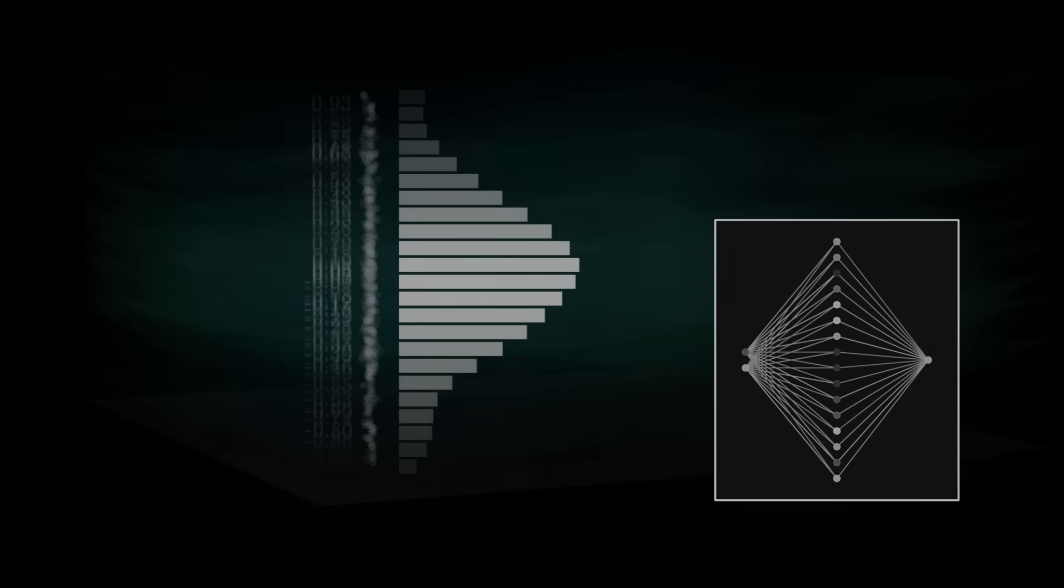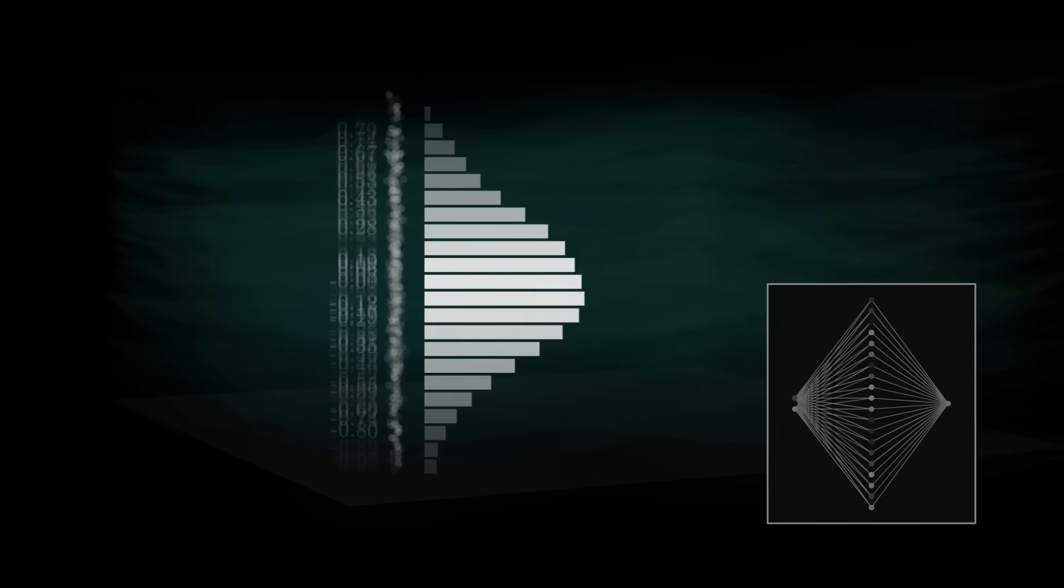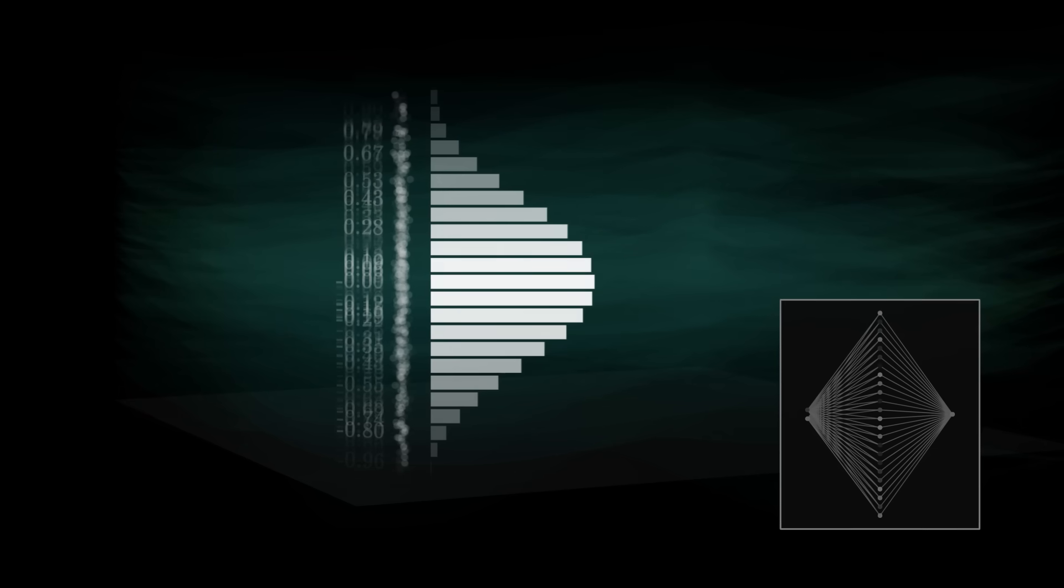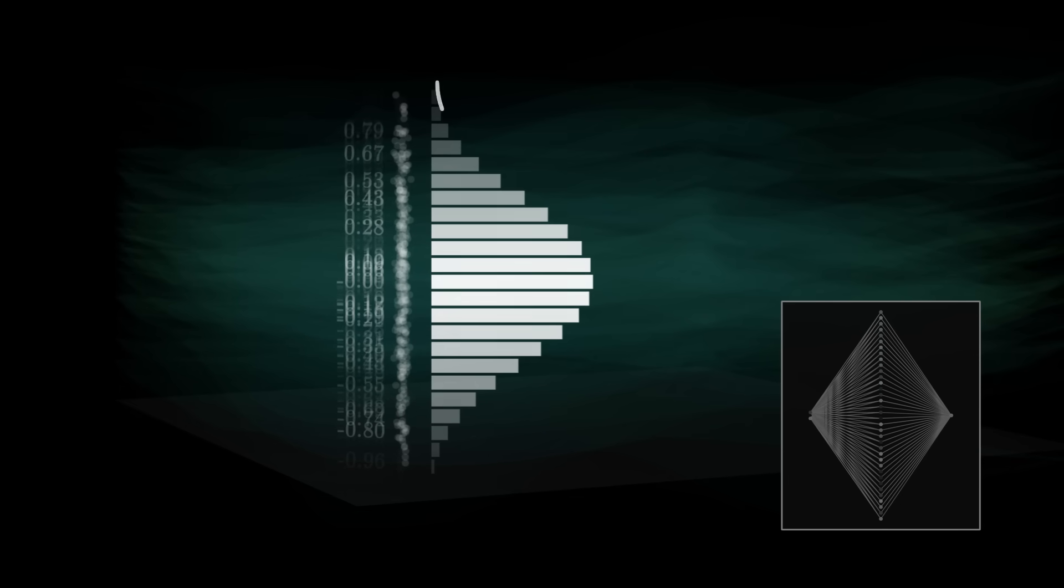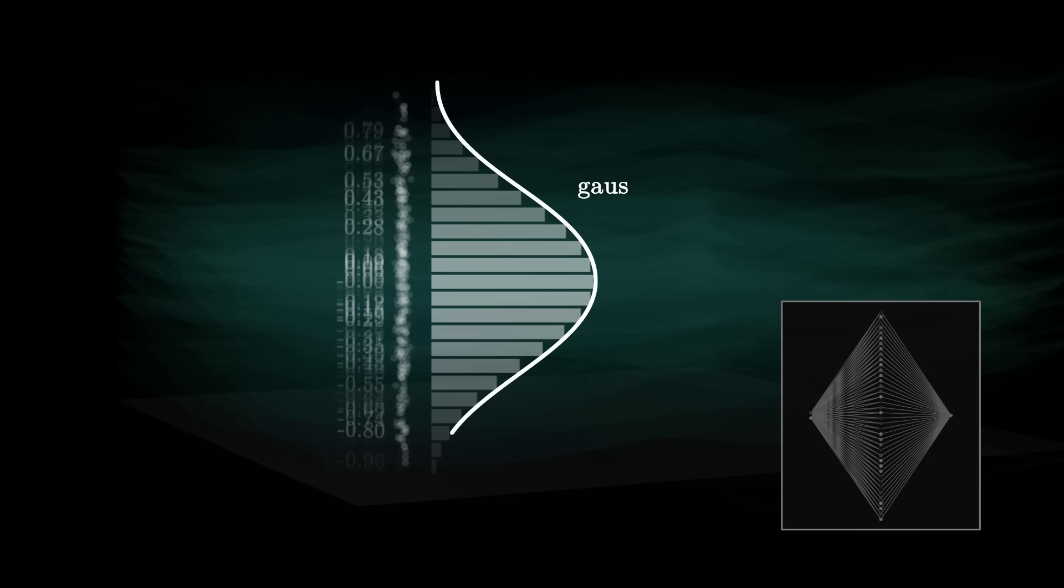Over time, however, it appears to become smoother and smoother. Surprisingly, the distribution seems to gradually converge towards a bell curve, what mathematicians call a Gaussian distribution.